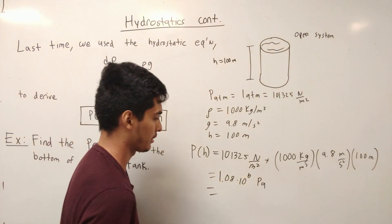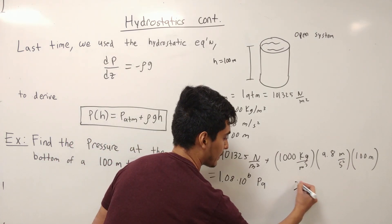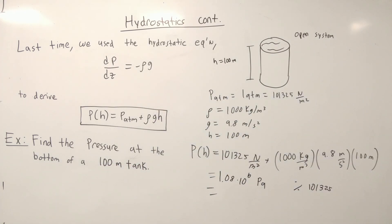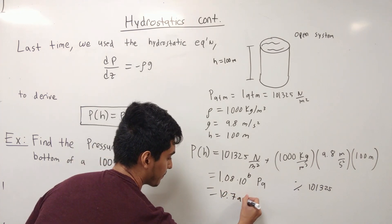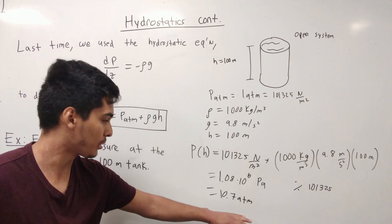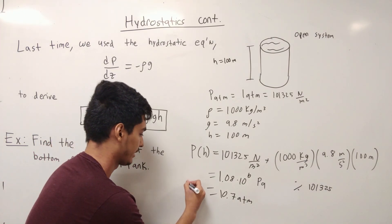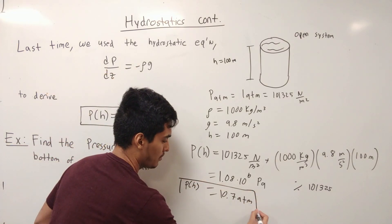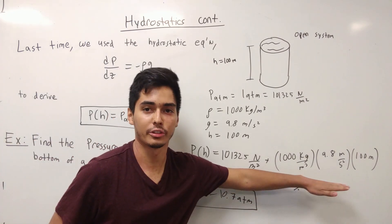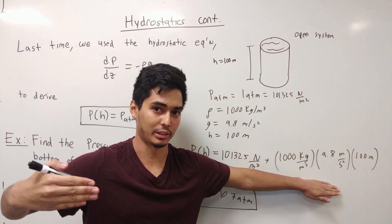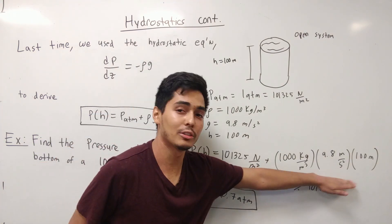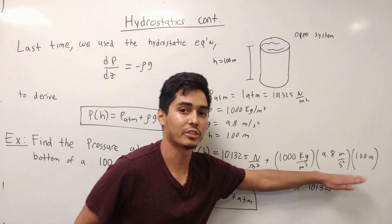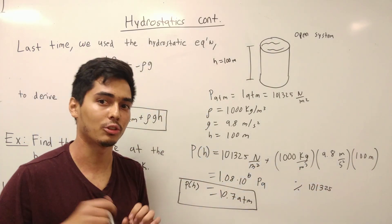And if you divide this by 101,325, this is going to be about 10.7 ATM. So it's about 10 to 11 times more pressure at the bottom of a tank that's 100 meters than what you and I are experiencing right now. Please don't memorize these conversions — I want you to understand them intuitively. That's why you need your dimensional analysis. Try to do it with different types of units and see how you can cancel things out.